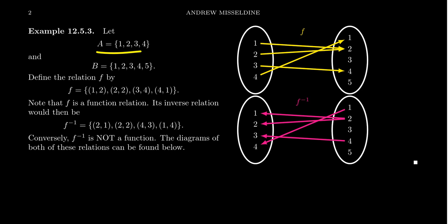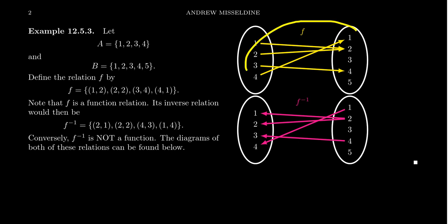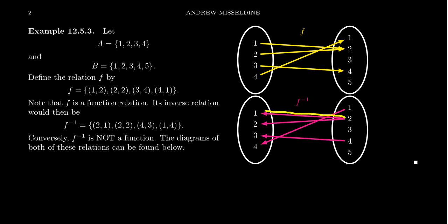Consider a function we've seen before. Take A = {1, 2, 3, 4}, B = {1, 2, 3, 4, 5}, and define the function: 1 maps to 2, 2 maps to 2, 3 maps to 4, and 4 maps to 1. So 1 and 2 both go to 2, 4 goes to 1, and 3 goes to 4. Using the principle we just learned, the inverse relation is defined by switching the order of all these arrows. So instead of 1 going to 2, we switch it so 2 goes to 1; instead of 4 going to 1, 1 goes to 4; and instead of 3 going to 4, 4 now goes to 3.